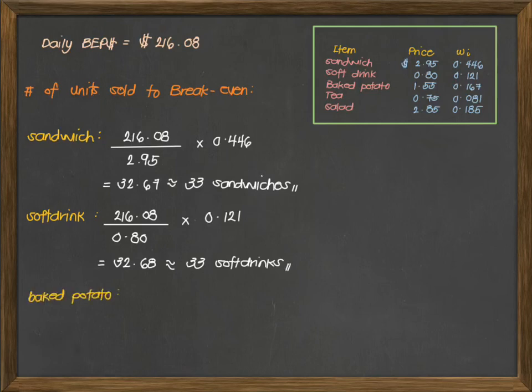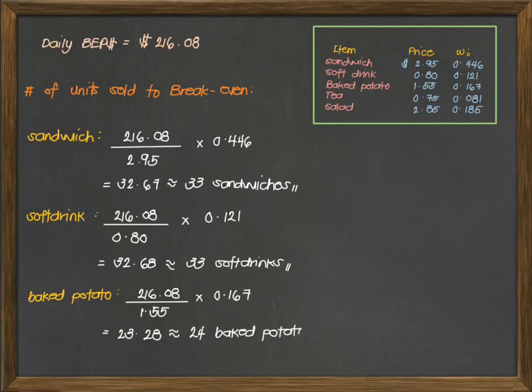Next is for baked potatoes. Using the formula, that's the daily break-even point divided by the price of baked potato multiplied by the weight, which is 0.167. The answer is 23.28 or rounding up to 24 baked potatoes. And then for the tea, that's 23.34 or 24 orders of tea should be sold.